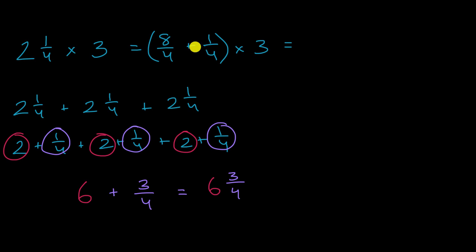and then I'm multiplying that whole thing times three, and so this is going to be the same thing as nine-fourths. Eight-fourths plus one-fourth is nine-fourths times three, and so we could say that's just going to be equal to nine-fourths plus nine-fourths plus nine-fourths